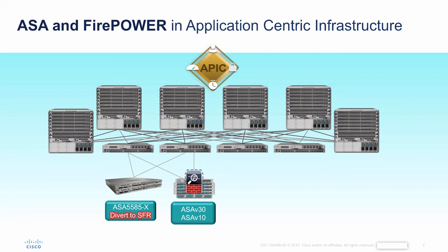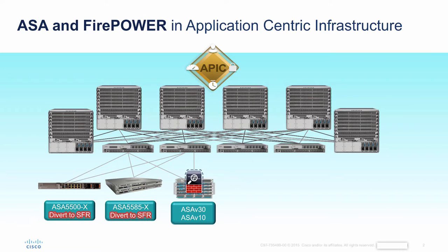I'm going to talk to you about insertion of adaptive security appliance in this fabric. We support, through a device package that Security BU had written, our 10 gig appliance that you see here, the 5585 with an embedded firepower module, also the physical 5500X. It's our one gig variant of the same appliance, as well as firepower and virtual ASA that we can instantiate in the fabric on different types of hypervisors.